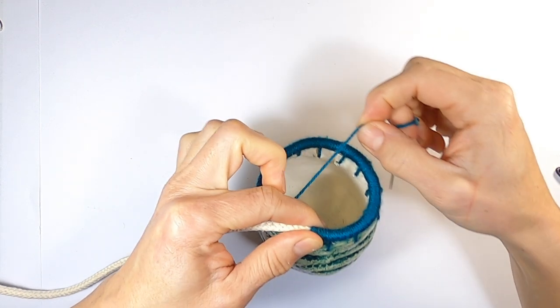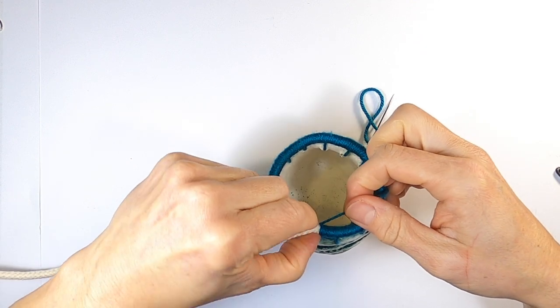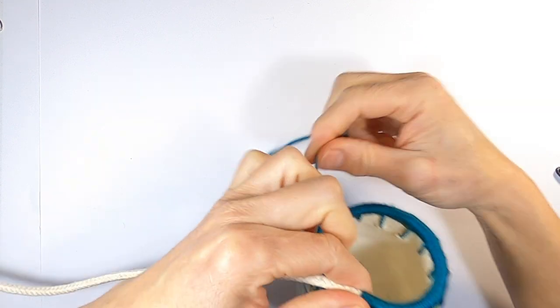Then you wind it around the single cord a few times, maybe ten, and then thread the needle under the bottom cord to connect it.